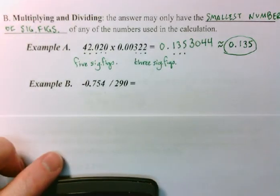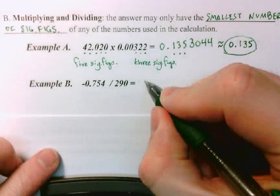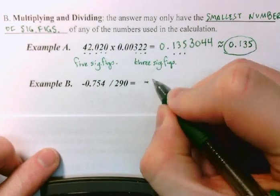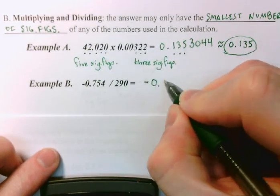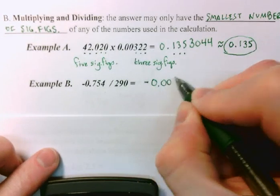Here, I plug in my calculation. And I have -0.754 divided by 290. And I get the answer, the calculated answer, from my calculator, -0.0026.